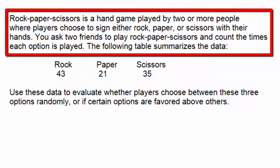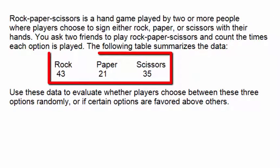Rock, paper, scissors is a hand game played by two or more people where players choose to sign either rock, paper, or scissors with their hands. You ask two friends to play rock, paper, scissors and count the times each option is played. The following table summarizes the data.